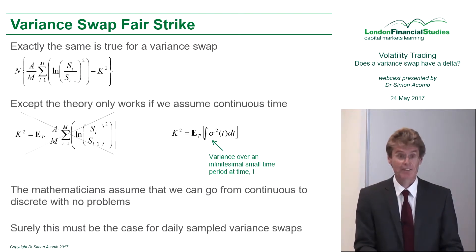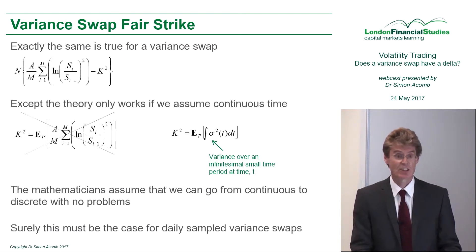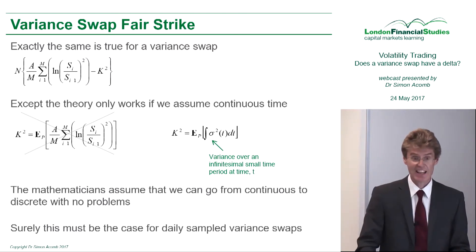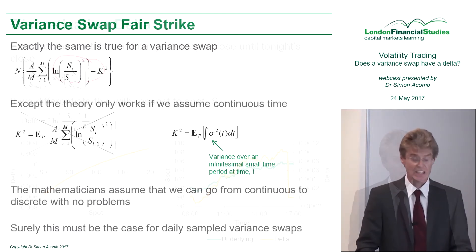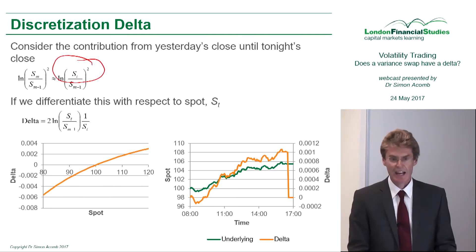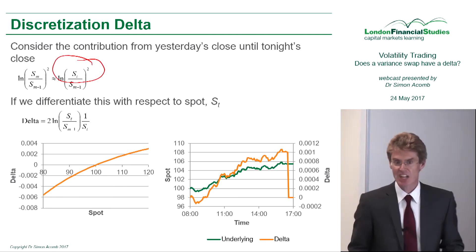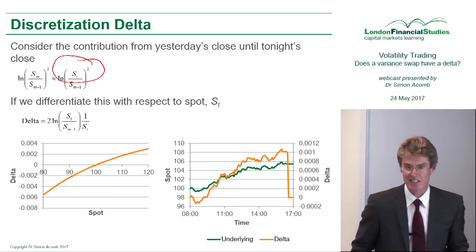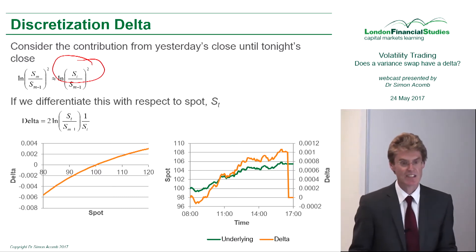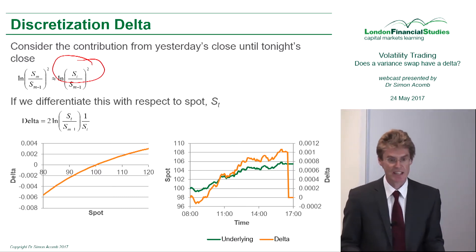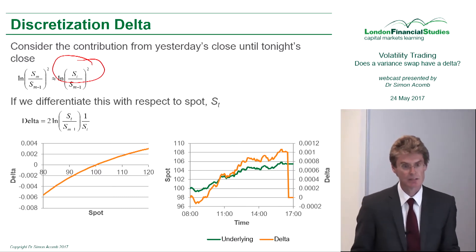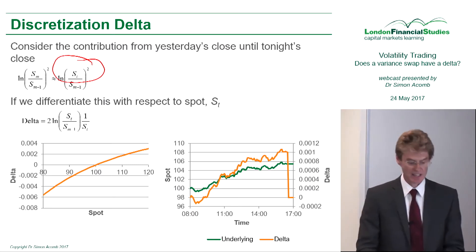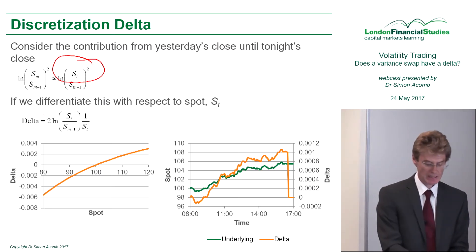The fair strike of the variance swap is set so that it is equal to the risk-neutral expectation of realized variance. If I differentiate that with respect to spot to find out its exposure — its Delta — I get this expression here.